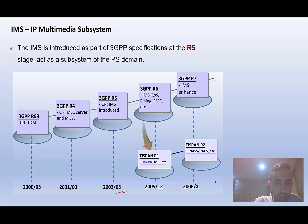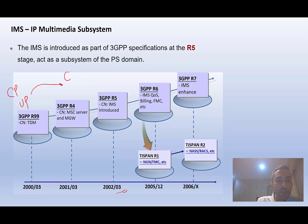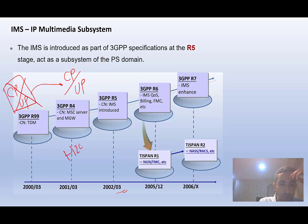Let's review the mobile networks architecture releases. The first architecture was R99, where the core network had no separation between control plane and user plane. They were separated in R4 — Release 4 — where the control plane and user plane were separated, giving us the MSC server and media gateway, which communicated using signaling protocols like H.248.